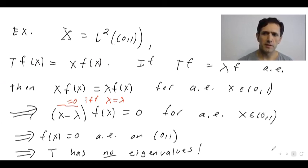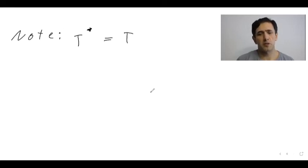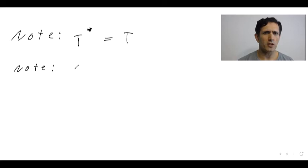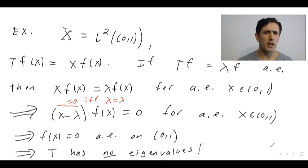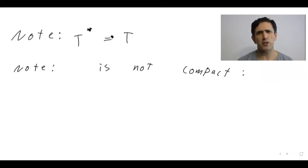So T—multiplication by x on L2—has no eigenvalues. Note that T is self-adjoint because the adjoint of multiplication by x is multiplication by x bar, which equals multiplication by x since x is real. Basically the same argument works for any L-infinity function that is not zero almost everywhere—no multiplication operator has eigenvalues on L2.